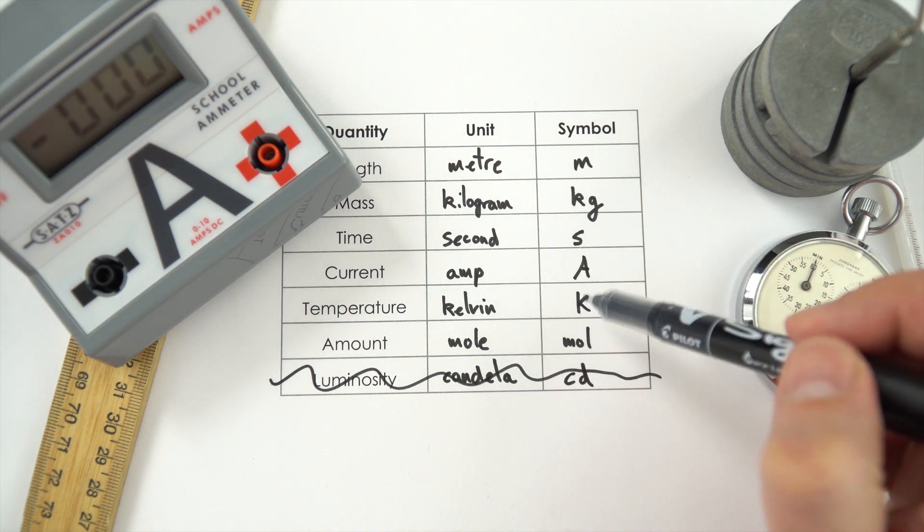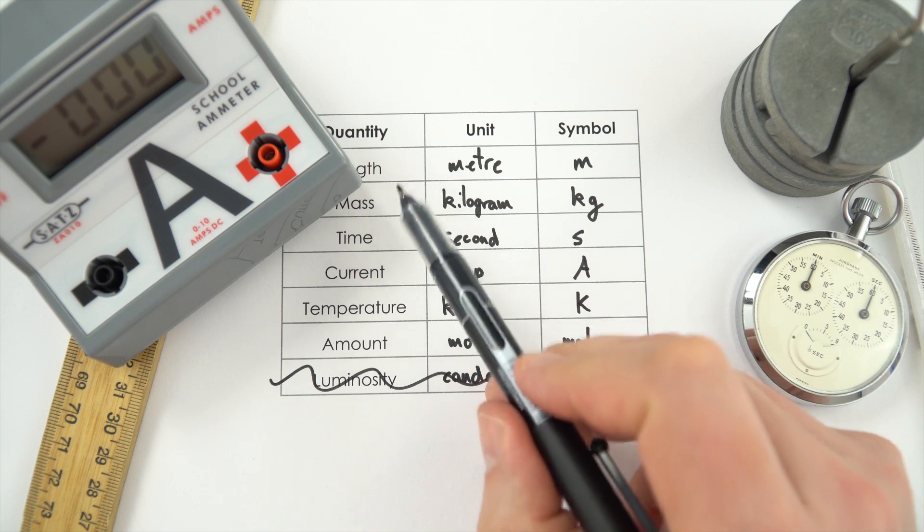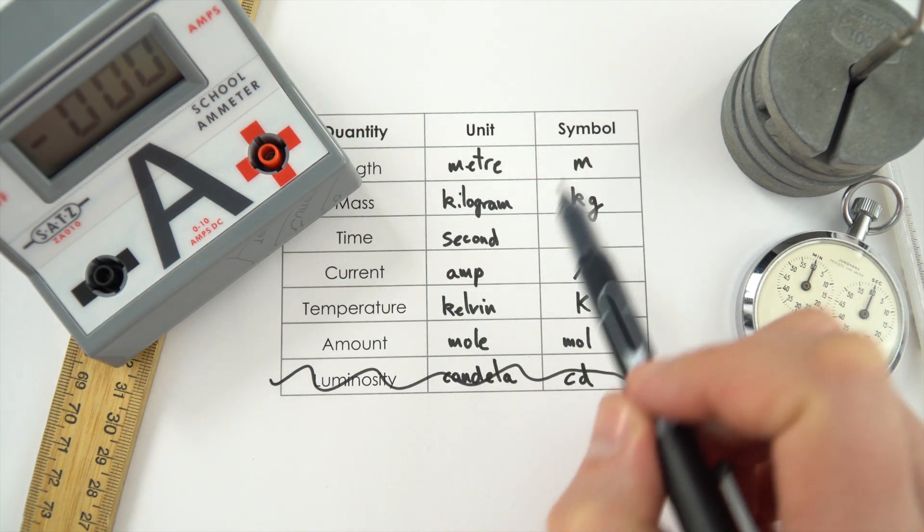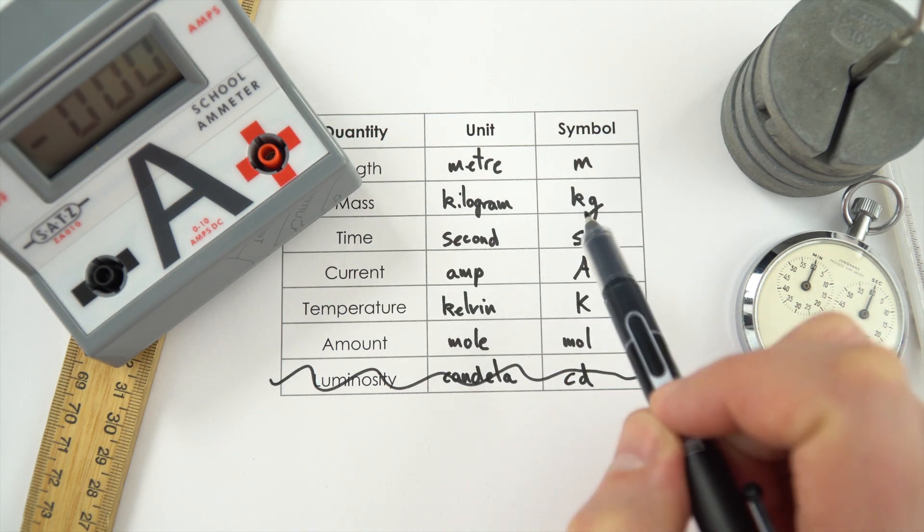But it's these other ones here that we're going to be using all the time. Especially the length, mass, time and current. And these are what we know as the base units.